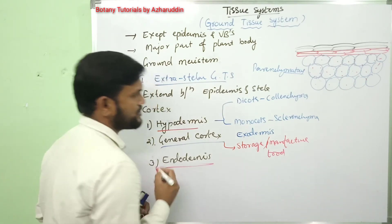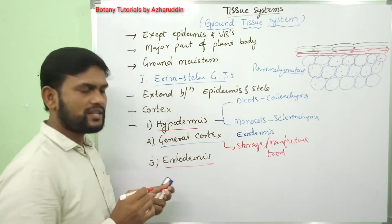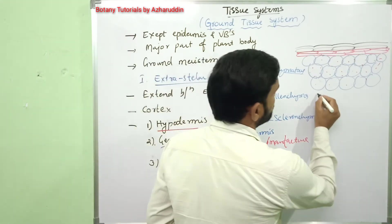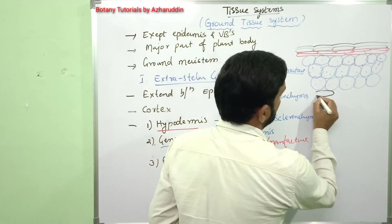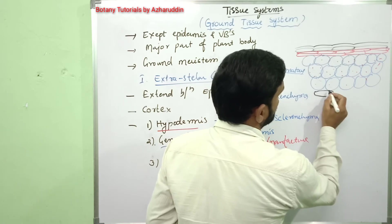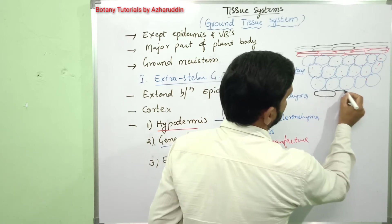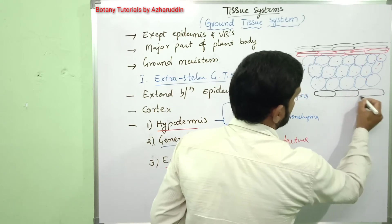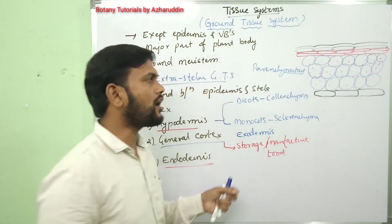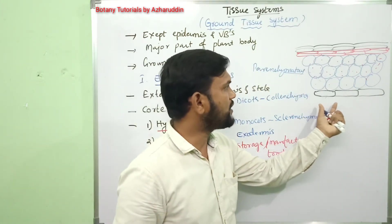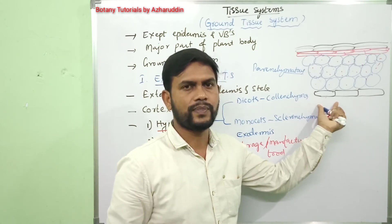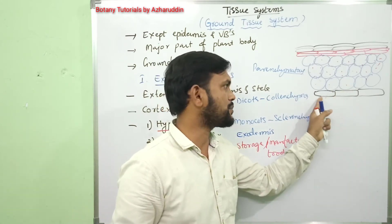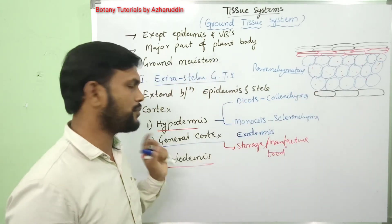Coming to endodermis — the innermost layer of the cortex is called endodermis. In this, cells are arranged in a single row and they are barrel-shaped cells. A single row of barrel-shaped cells is present in the endodermis.